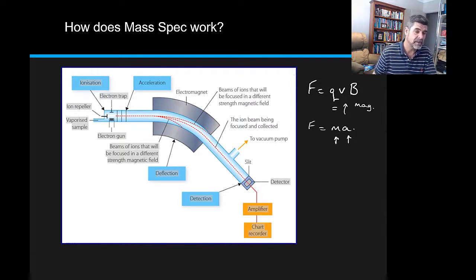Electrons are a better choice because they have so little mass. They're not going to influence the overall mass of the substance too much.